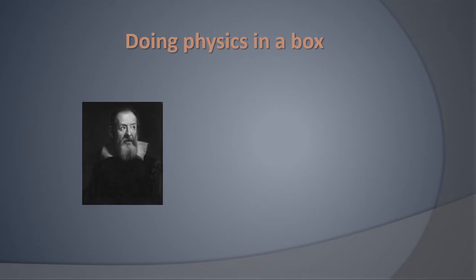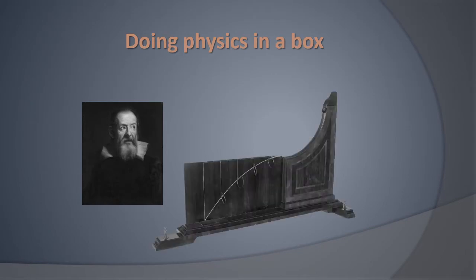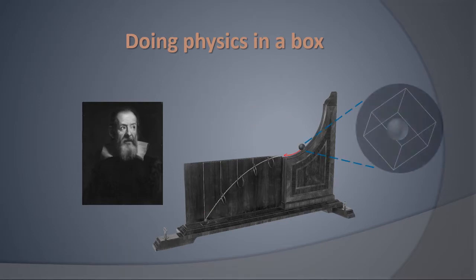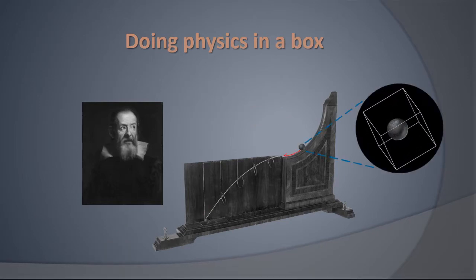Historically, Galileo was the first to systematically experiment with nature and separate it into subject system and target system. According to physicist Lee Smolin, this method may be called doing physics in a box, as it singles out target systems from the rest of the world.